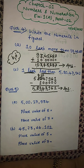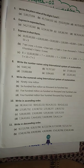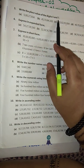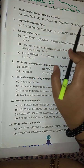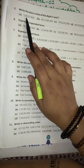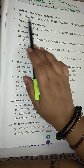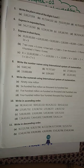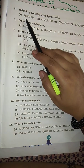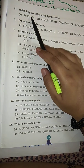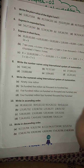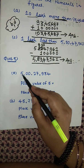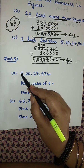Now let's move to question number 5: write the place value of digits 5 and 7. There are four questions — (a), (b), (c), (d) — and in each number we have to find the place value of digits 5 and 7. Students, what do you understand by place value?